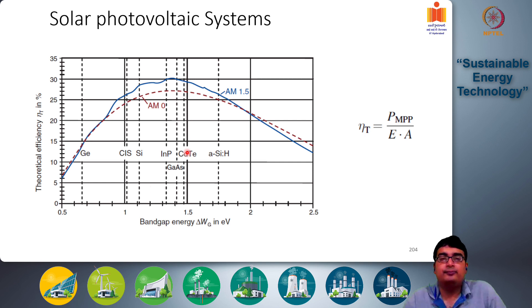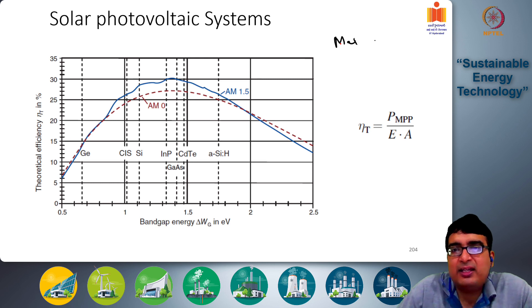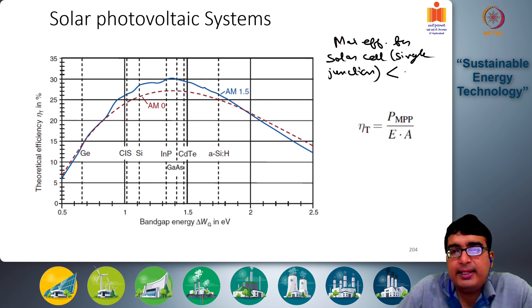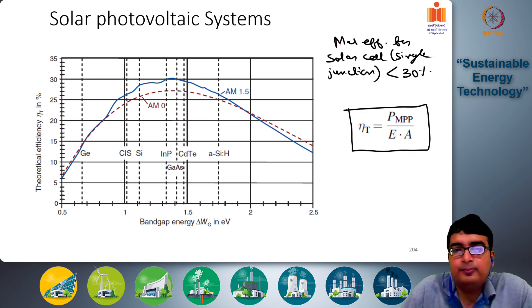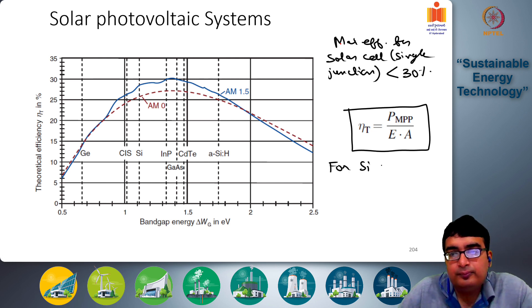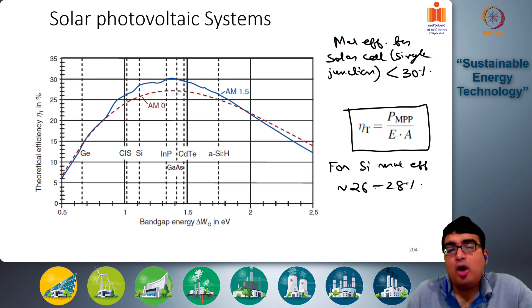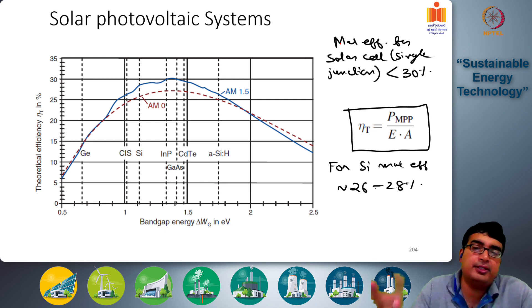For maximum efficiency of single junction solar cells, the theoretical limit is less than 30 percent. For silicon, maximum efficiency is of the order of 26 to 28 percent. Of course, there will be other types of losses, so actual realizable efficiencies are around 20 to 22 percent.